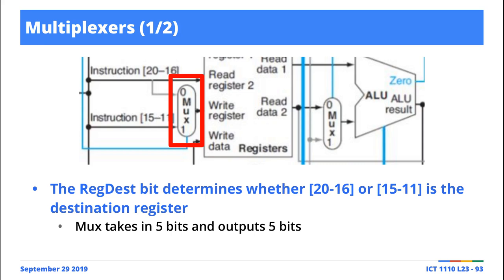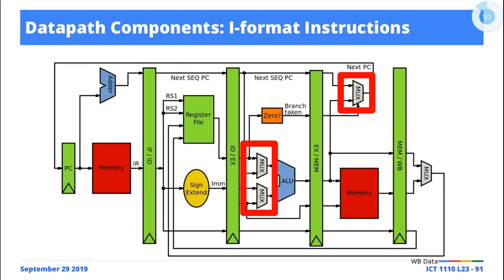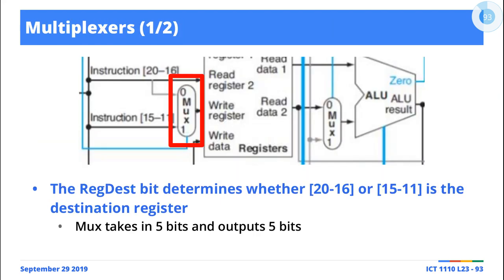There's a control wire here, which is appropriately named 'Register Destination.' Depending on the value of register destination, the multiplexer decides which one of these inputs is supposed to act as a destination register. So in this case, if the register destination bit is a 1, then the value that will serve as destination register — RD — will be represented by bits 15 to 11. If the value coming into register destination is a 0, then we know this is an I-format instruction, and the destination register will be bits 20 to 16.